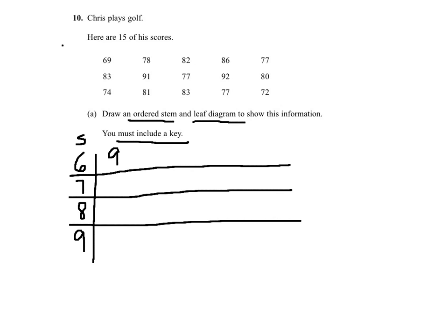So the first one is 69, the second one will be 72, 74, 77, 77 three times, then 78, 80, 81.